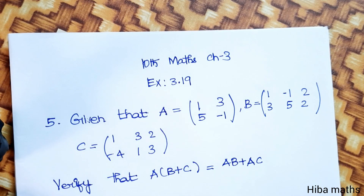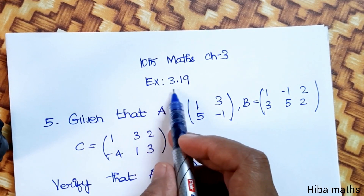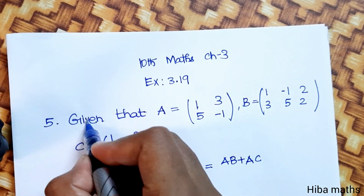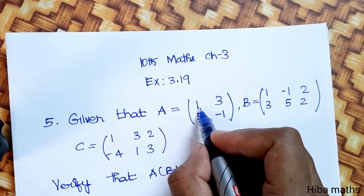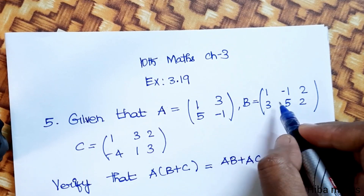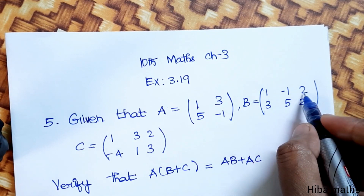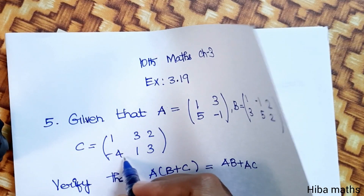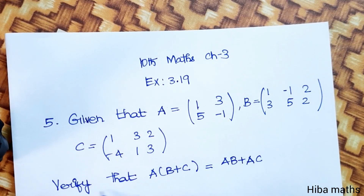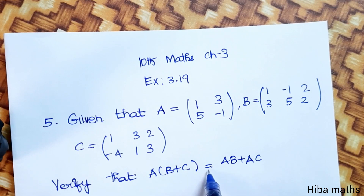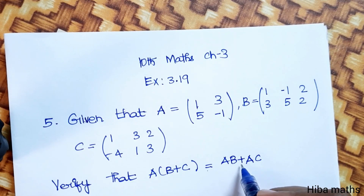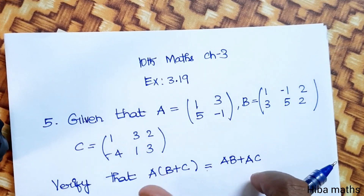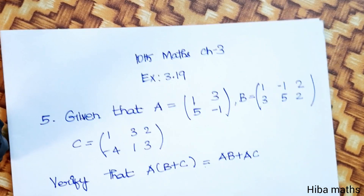Hello students, welcome to Hiva Max 10 standard, chapter 3, exercise 3.19, fifth question. The given question says: given that A is equal to [1,3;5,-1], B is equal to [1,-1,2;3,5,2], C is equal to [1,3,2;-4,1,3]. Verify that A into B plus C is equal to A into B plus A into C. We need to verify LHS is equal to RHS.